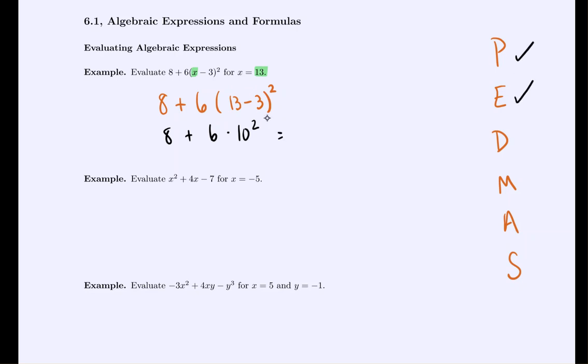Next it says deal with exponents. So 10 squared is 100. So we'd have 8 plus 6 times 100. Then we deal with multiplication. 6 times 100 is 600. Finally we add and we would get the value 608 would be our final answer. So that's the expression evaluated at 13.